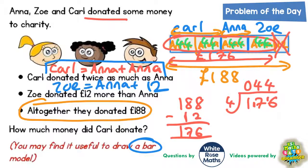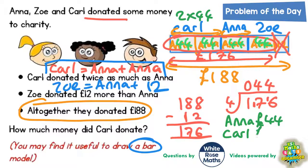Now we need to work out how much Carl donated. If Anna donated £44, Carl donated twice as much — and you can see Carl's is two lots of £44 from the bar. So two lots of £44 is £88. And Zoe, even though it doesn't ask us, donated £12 more than Anna: £44 plus £12 is £56.